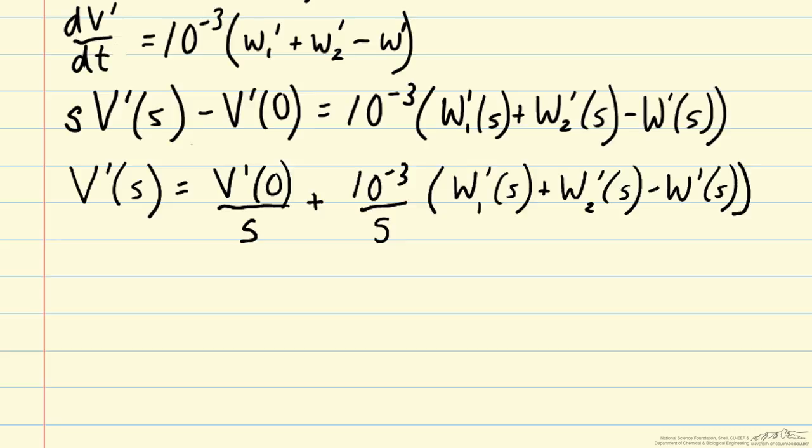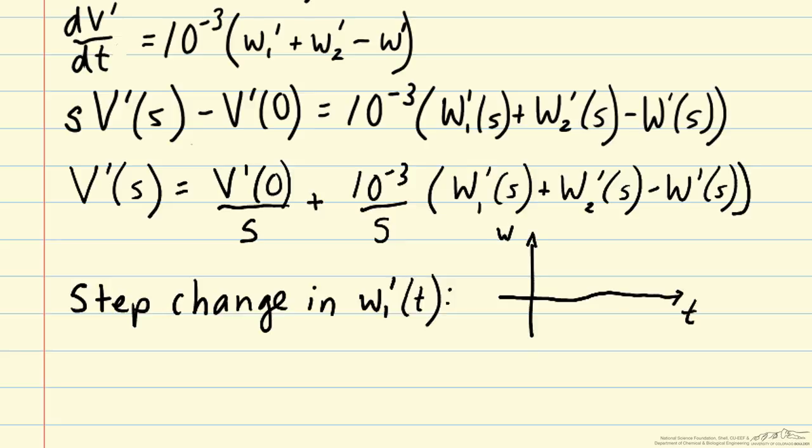This expression is valid for any values of the inlet and outlet flows, but if we consider a specific value of the w's, here we'll consider a step change in w1 of t, then we can actually calculate what the volume change will be. So let's consider here time and here w1. So w1 is going to start at its steady state value of 1 and then it will jump by 0.1, we'll have a step increase at time 0.